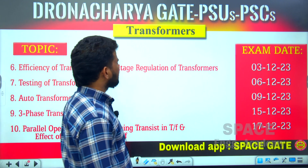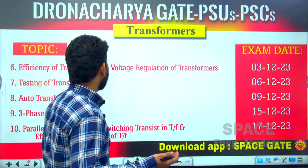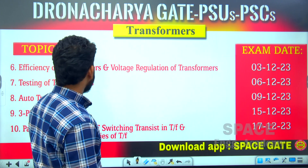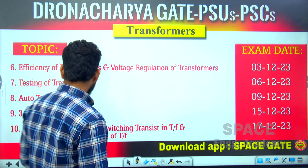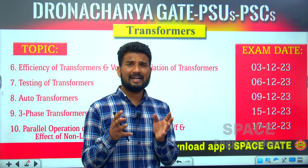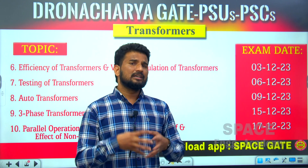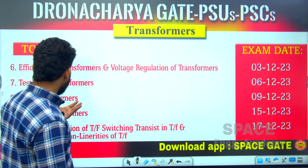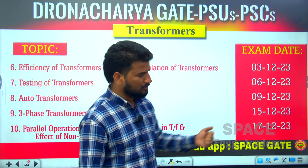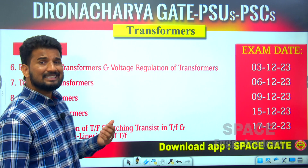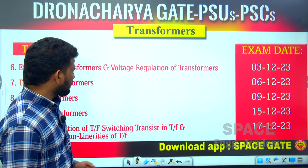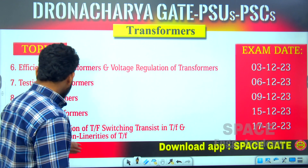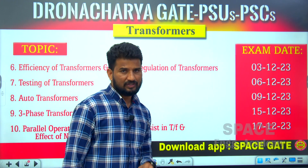Next is efficiency of transformers and voltage regulation — the voltage regulation formula and basic problems are important here, along with testing of transformers. Testing of transformers will be on 6th December. On 9th December, there will be an exam on auto transformers — when both primary and secondary use a single winding. On 15th December, the exam covers 3-phase transformers, and on 17th December, parallel operation of transformers, switching transients, and the effect of non-linearities of transformers.